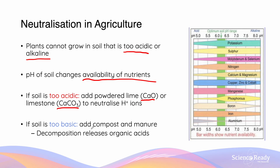If the soil is too basic, we do the opposite — we need to introduce H+ ions into the soil. We add compost and manure, which will decompose to release organic acids. One such example is the release of CO2 from decomposing compost, which then forms carbonic acid.